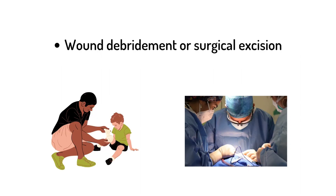The next step is wound debridement. If it is a small wound, we can go for wound debridement; if it is a large wound, we definitely need to do surgical excision. This is because Clostridium tetanus is an obligate anaerobe — the wound and surrounding area lacks blood supply and oxygen, creating an anaerobic medium for bacterial growth. Debridement or excision prevents this depending on wound size.